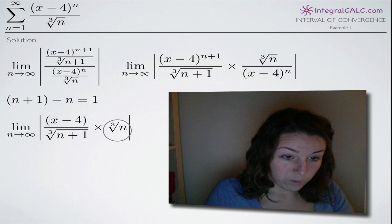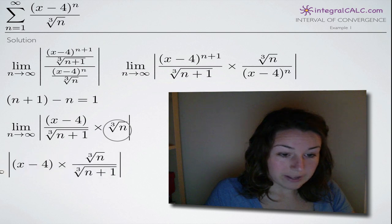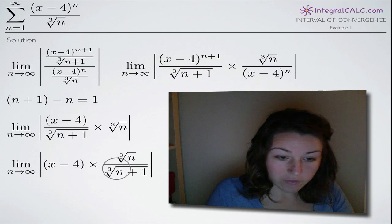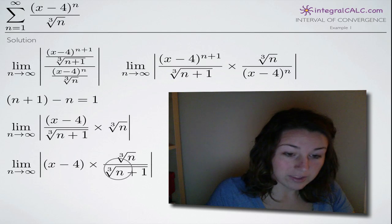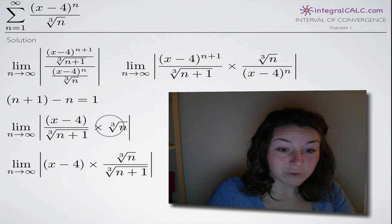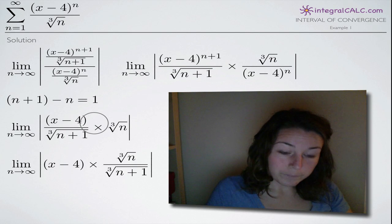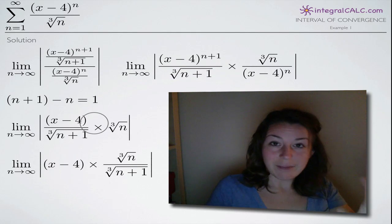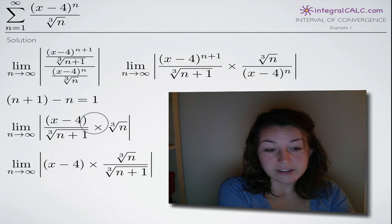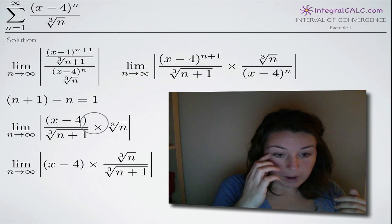We take (x minus 4) and put it by itself, rearranging the fractions so all n terms are together in one fraction. Since everything is multiplied together, we can separate the x's from the n's, which is a good tactic for simplifying in these kinds of problems.